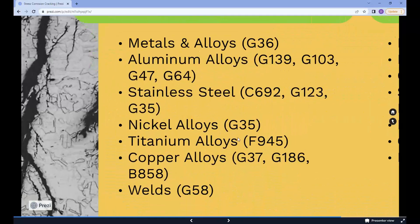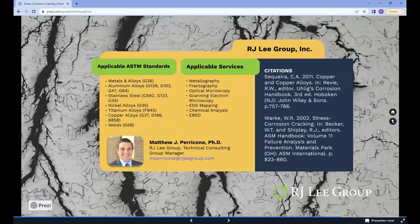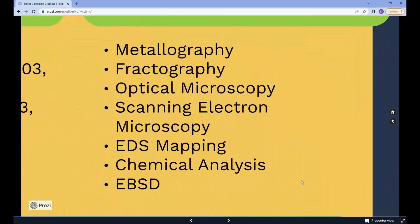Here are the applicable ASTM standards, which include metals and alloys, aluminum alloys, titanium alloys, and more. These are applicable services that RJ Lee Group offers. Some of our related project examples could include impellers, cabling, welds, pipe fittings, bridge components, and underground long wall components.